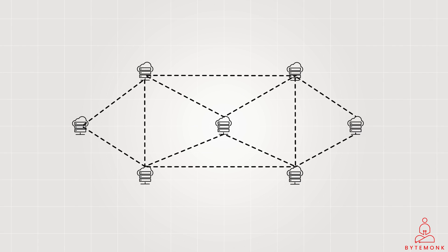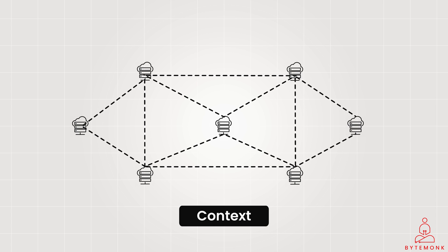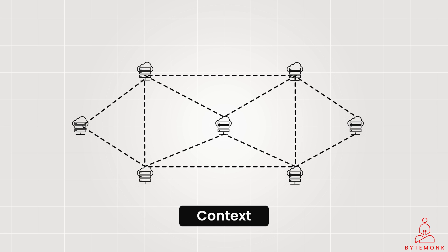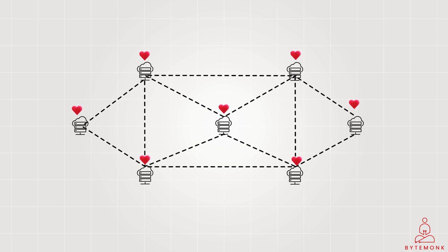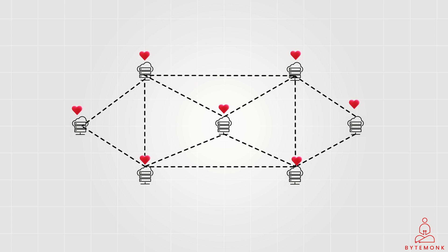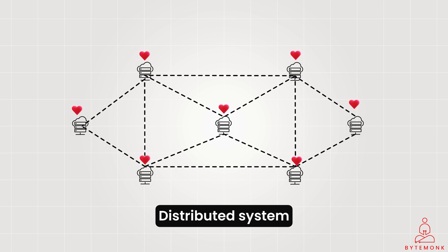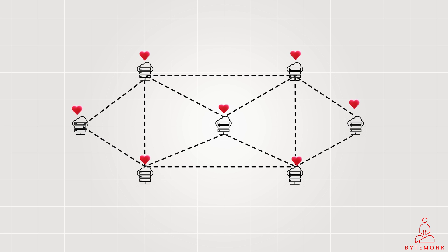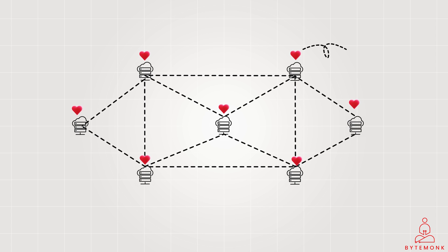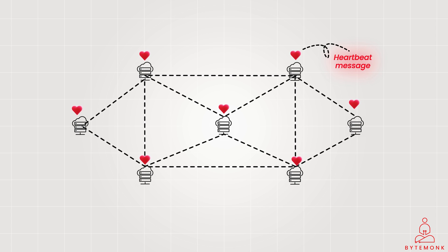The operation of the heartbeat mechanism depends on the specific context and system in which it is used. Generally, a heartbeat works by sending periodic signals or messages between nodes or components in a distributed system to confirm their operational status and detect failures. Periodically, each node or server sends a heartbeat message to its peers.